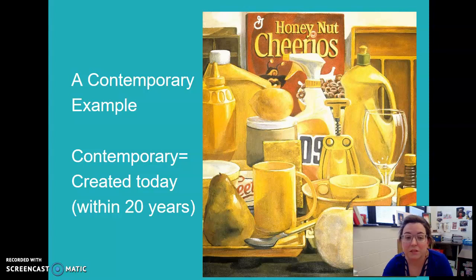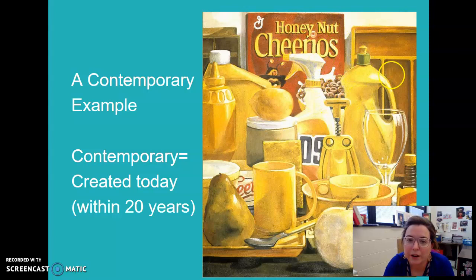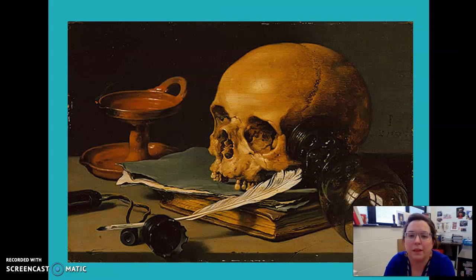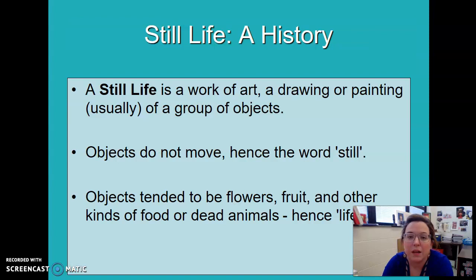A contemporary example of a still life is something made within the last 20 years, which is 2000 to 2020. Here you can see the contemporary items — a lot of plastic things. You have the mustard bottle, 409, there's a corkscrew, there's still fruit, just like in the older version. And as you go through my still life PowerPoint, you might notice similar items: a feather, a skull, some books, some glassware.